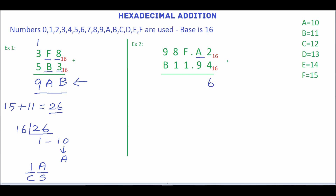The next digits are A and 9. A is equivalent to 10, so 10 plus 9 is 19. Since 19 is not a hexadecimal number, we convert it by dividing 19 by 16. The quotient is 1 and the remainder is 3, so the equivalent hexadecimal number is 13. In this, 3 is the sum and 1 is the carry. Write 3 and write the carry.